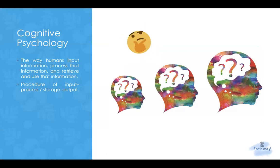With cognitive psychology, cognitive psychologists and researchers are interested in how people process information. They look into how we input information, then how we process that information, and finally how we retrieve and use it.